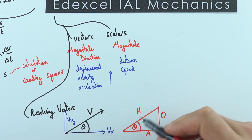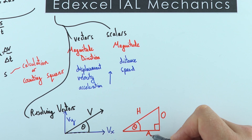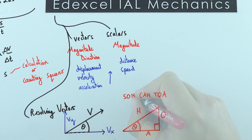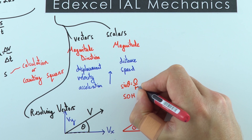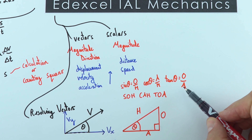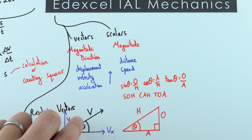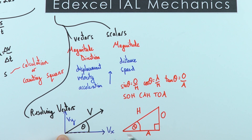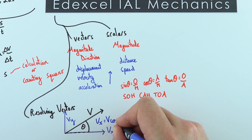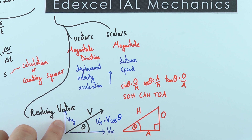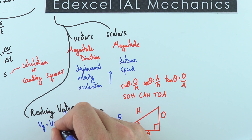In a right-angle triangle with angle theta, the side opposite to the angle is the opposite side, the longest side is the hypotenuse, and the side next to theta is the adjacent. Remember SOH CAH TOA: sin theta equals opposite over hypotenuse, cos equals adjacent over hypotenuse, and tan equals opposite over adjacent. This lets us work out the components: v is the hypotenuse and vx is the adjacent, so we use cos — vx equals v cos theta. The vertical component vy is like the opposite side, so vy equals v sin theta.